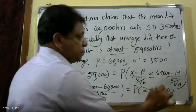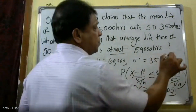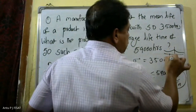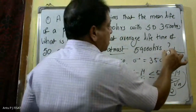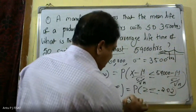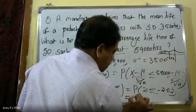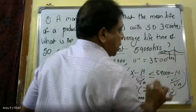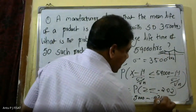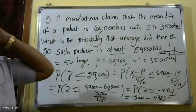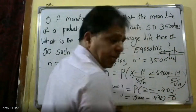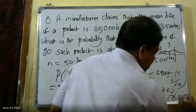So the Z value is minus 2.02. We use the standard normal table: the table value for Z = 2.02 is 0.4783. Since we want the left tail, we subtract from 0.5: 0.5 minus 0.4783 equals 0.0217.